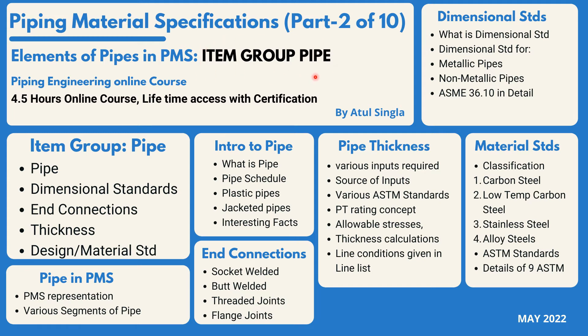The main agenda here is item group: Pipe. We are going to divide this section into five parts: pipe, dimensional standard, end connection, thickness, and design and material standards. First, we look at how PMS is represented and its various segments for pipe — what pipe is, how pipe schedule is defined, plastic pipes, and other interesting facts captured with respect to piping material specification.